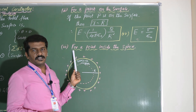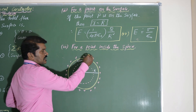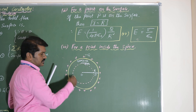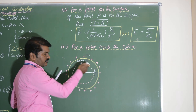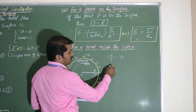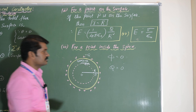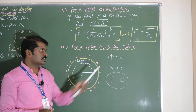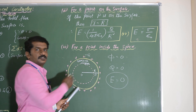For the third case, consider point P inside the spherical conductor. Since charge always resides on the outer surface of a conductor, if we draw a Gaussian surface inside the conductor, the charges are present outside that Gaussian surface. Hence, the net flux over the Gaussian surface is zero, which means the charge enclosed Q equals zero. If Q equals zero, the electric field expression gives E equals zero. Therefore, the electric field inside a spherical conductor is always equal to zero.